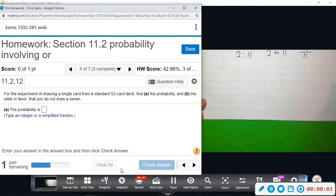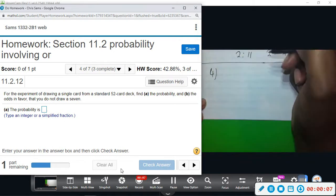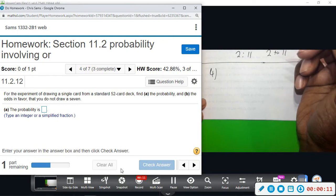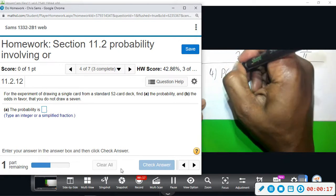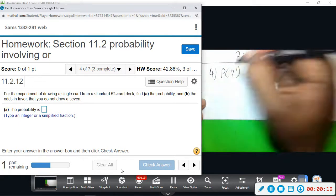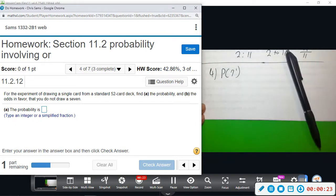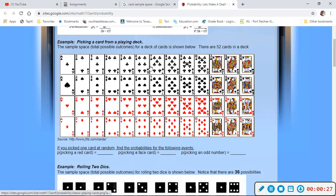All right, number four: we want to find the odds and the probability that we do not draw a seven. So I'm going to say probability of seven complement - we don't want a seven. If you look at this sample space one more time, there are one, two, three, four sevens, one of every suit.